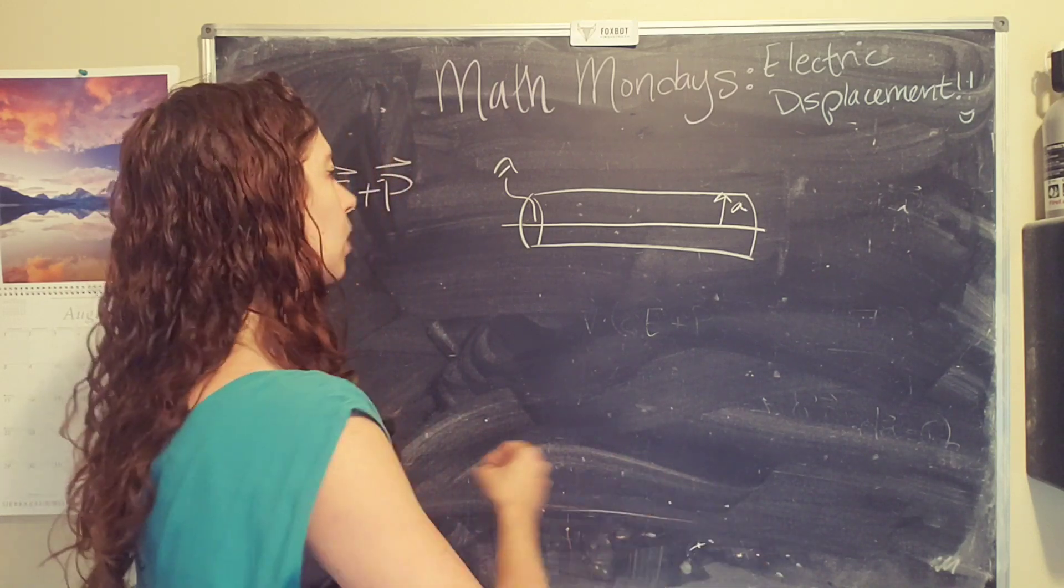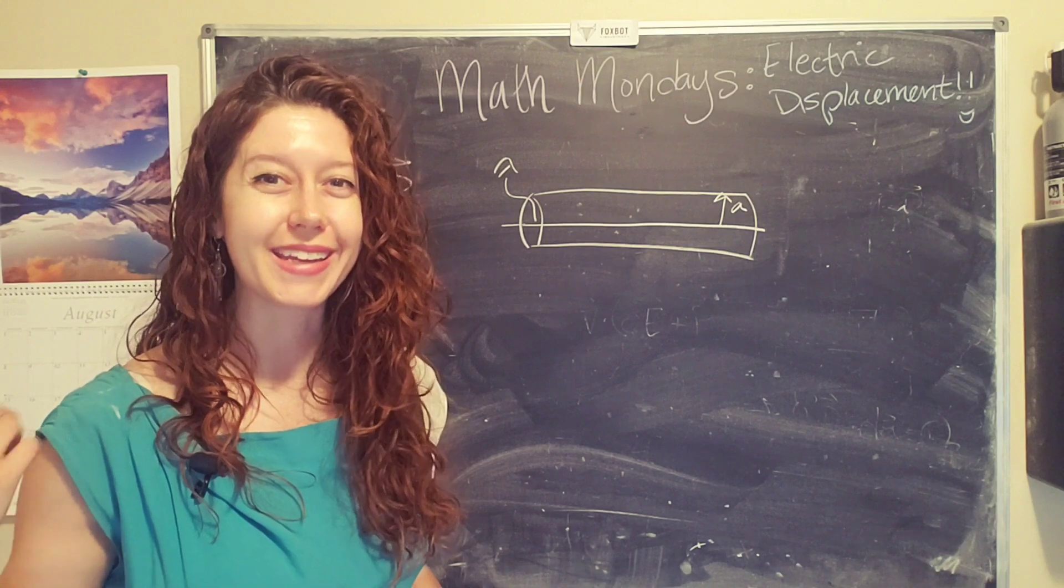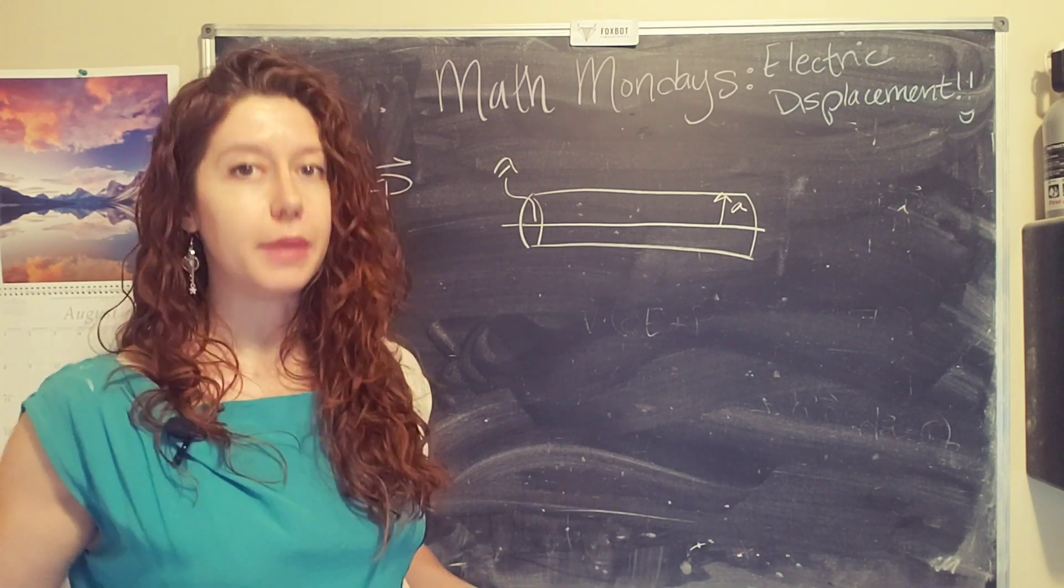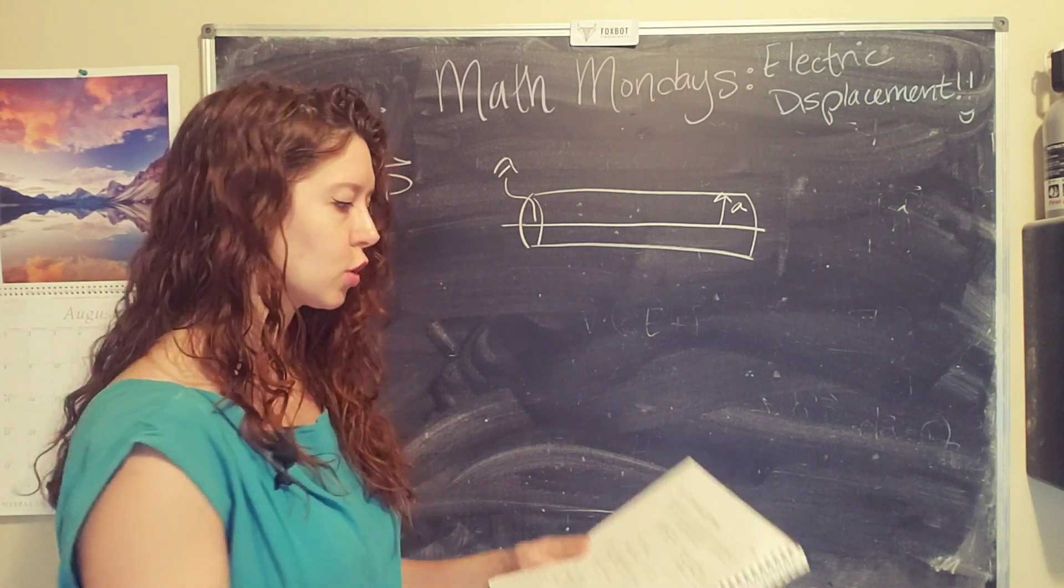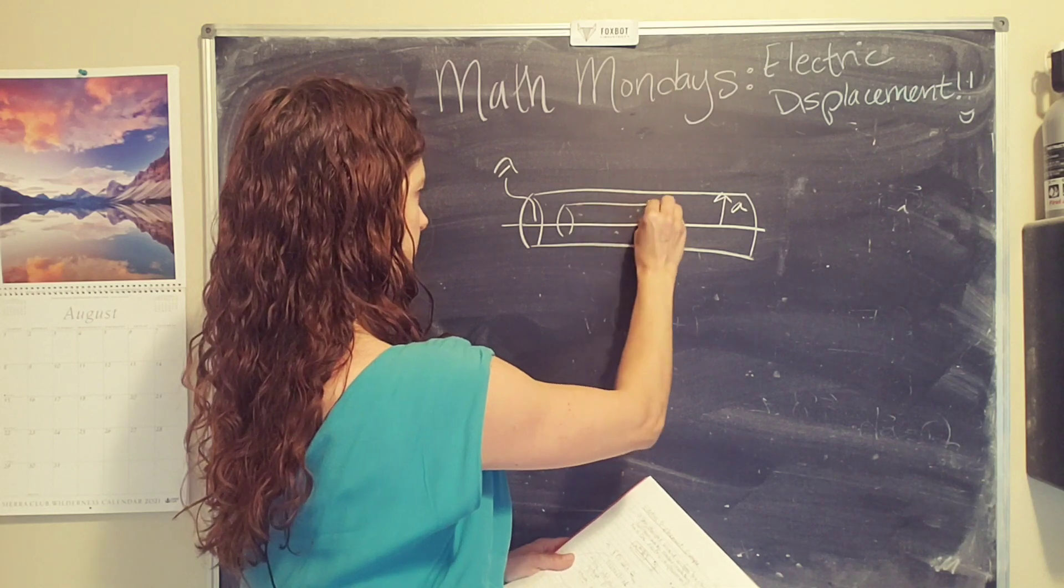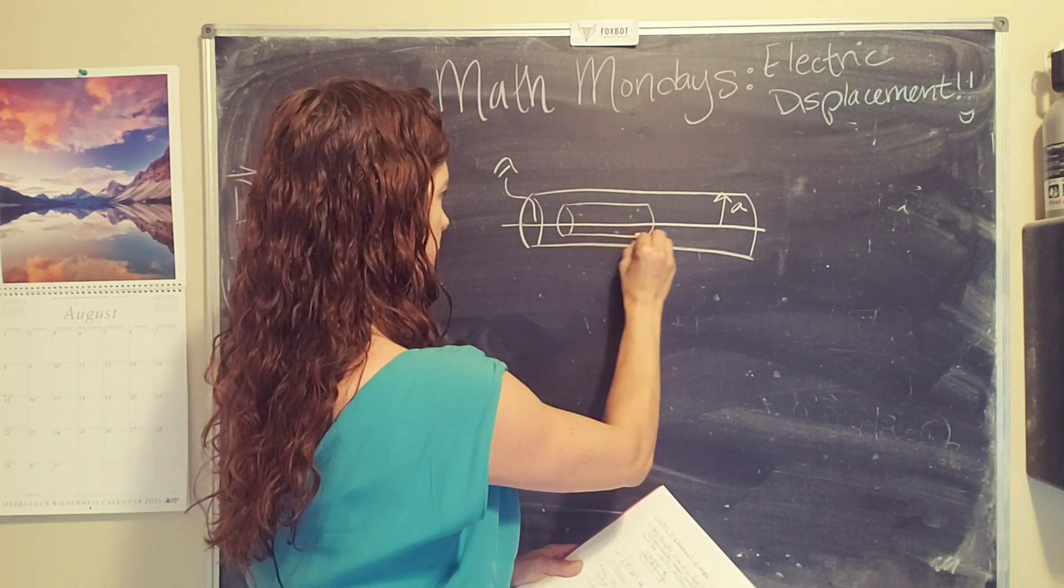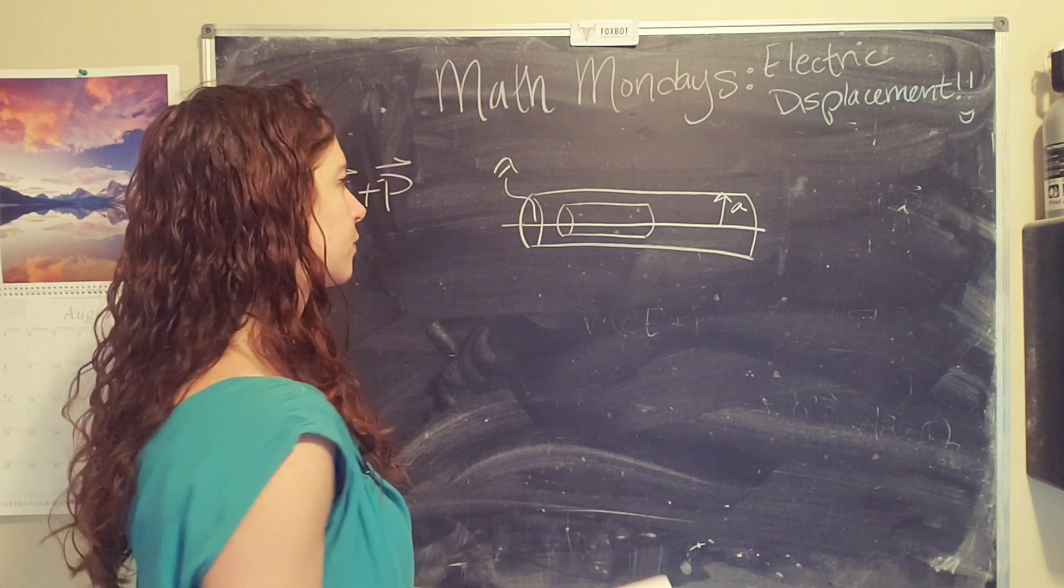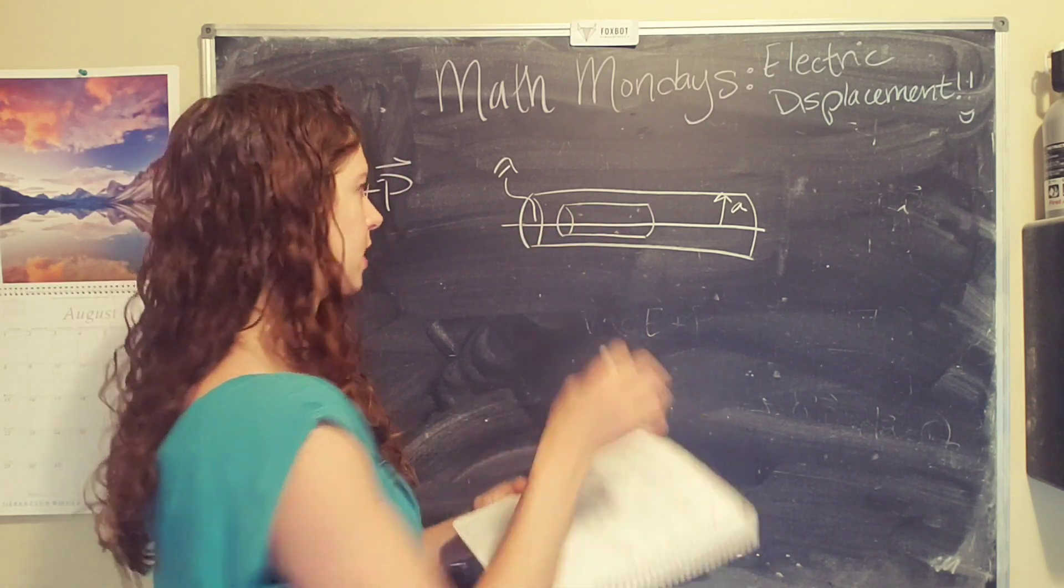And what we're going to do is draw a Gaussian surface. Since our geometry is a cylinder, it makes sense to pick a cylinder for a Gaussian surface. So that is going to enclose the charge, not the, well, well, yeah, we'll just draw it like this for now.